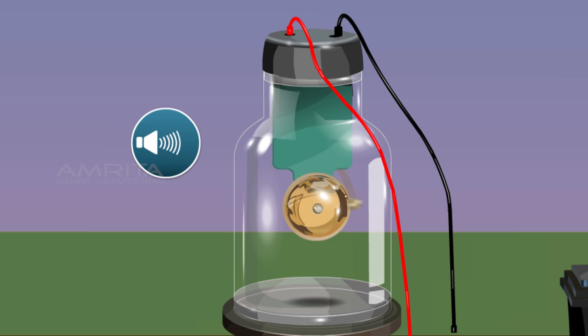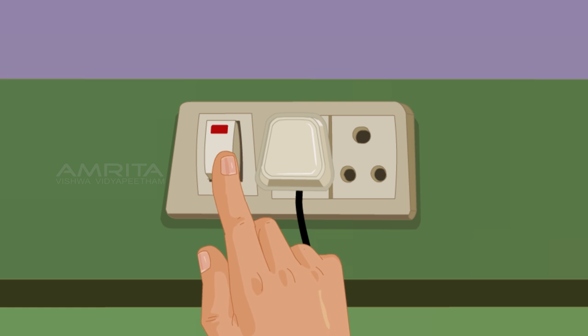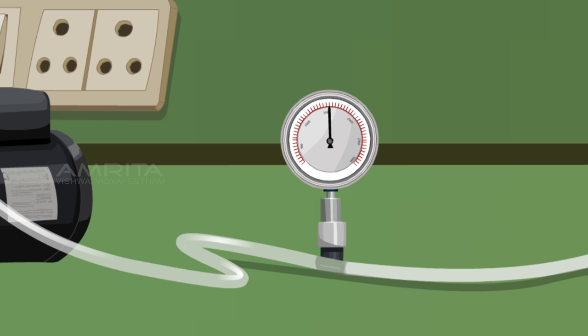Then the bell starts to ring. Now switch on the pump and you see that the vacuum pump starts to pump air from the bell jar, which is evident from the meter reading of the pressure gauge.